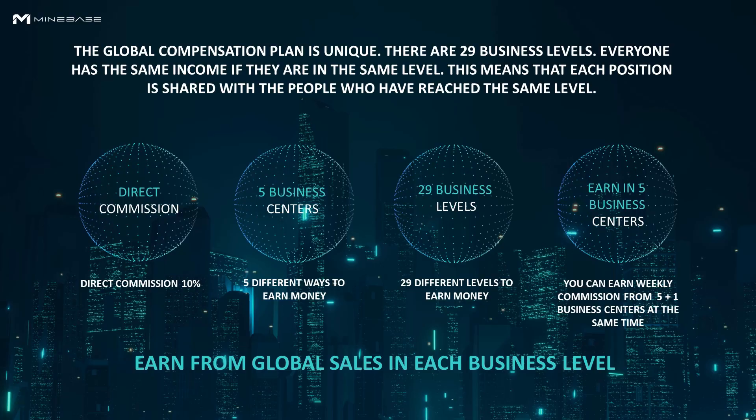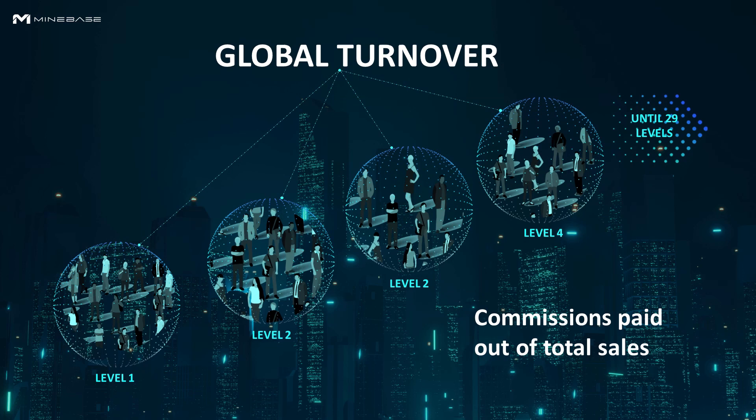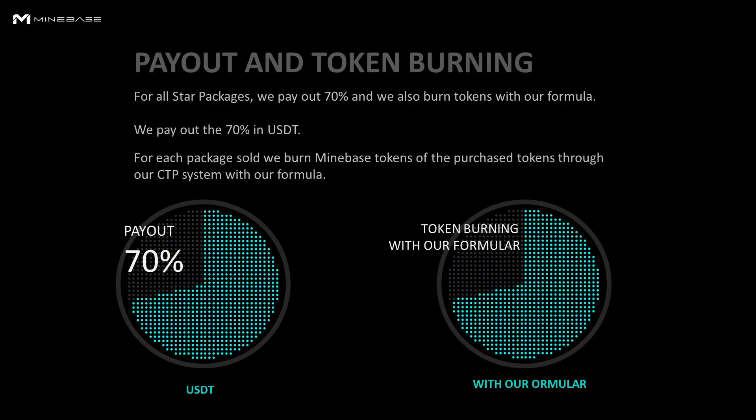There are 29 business levels. Everyone receives the same if they are in the same level — each position is shared with the people who have reached the same level. We pay out 70% in commission and we burn tokens with our formula.